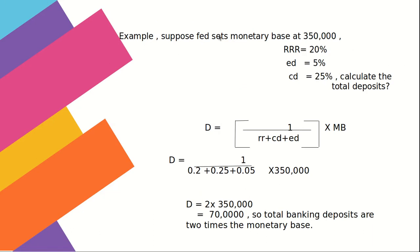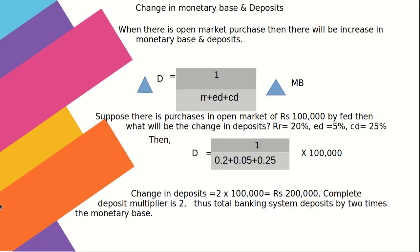Solving for deposits: D = [1 / (RR + ED + CD)] × MB. This means total banking system deposits are a multiple of the monetary base. For example, if the Fed sets MB = 350,000, RR = 20%, ED = 5%, CD = 25%, then D = [1 / (0.20 + 0.05 + 0.25)] × 350,000 = 700,000, which is 2 times the monetary base.